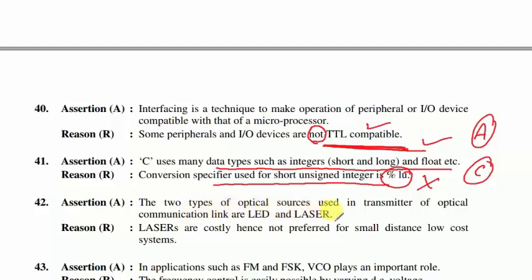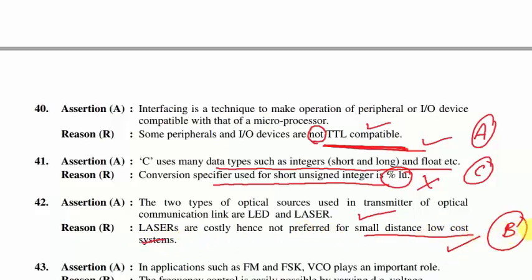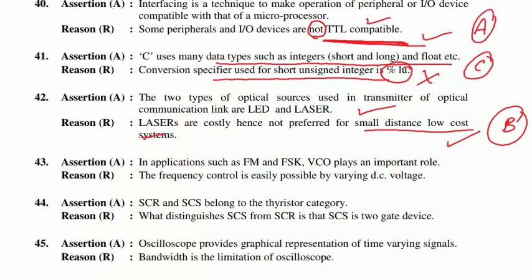Question 42: the two types of optical sources used in optical communication links are LED and laser — correct. Lasers are costly and hence not preferred for short-distance, low-cost systems — true. However, the reason does not properly explain the assertion; lasers are used where monochromaticity and low loss are critical. Option C follows.